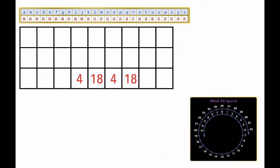And there's a mod 26 spiral which tells us how to reduce a number to one that is between 0 and 25.